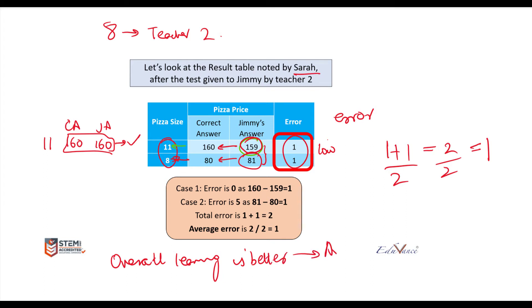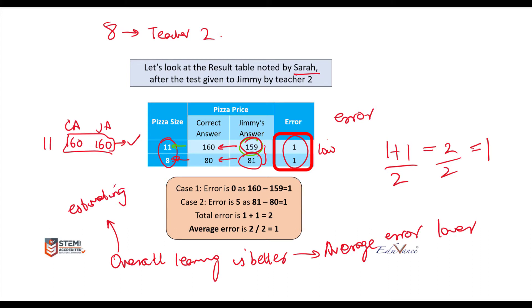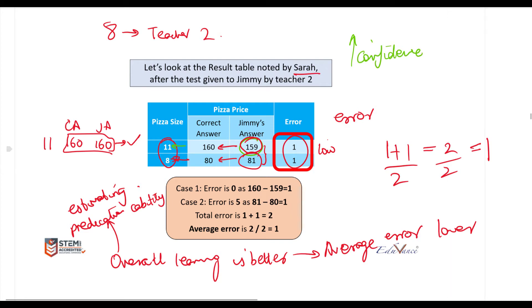Even if his answers are not exact, Jimmy's overall prediction capability is much better because his average error is very low. We can say with a higher degree of confidence that Jimmy will give an answer which is closer to the right answer, and that is very important when it comes to estimation or prediction.